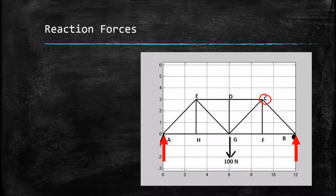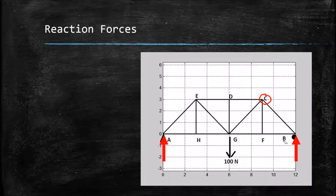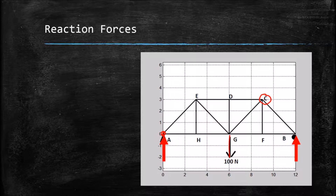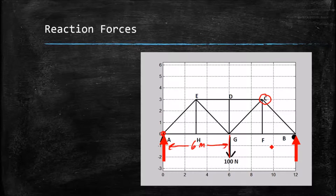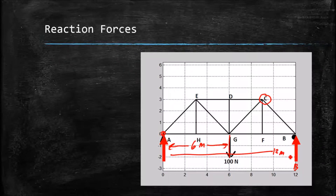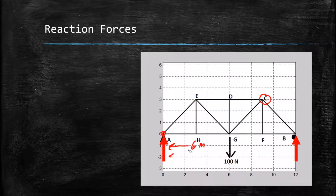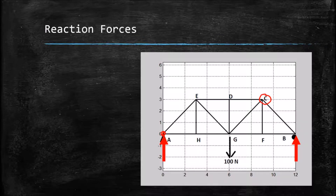Our first step is to find the reaction forces at each end. All I really need is the reaction force at B. I can do the sum of moments about A — the hundred Newtons times six meters, minus the unknown force at B times 12 meters. Or I can just look at this: it's very symmetric, the load is right in the middle, and by symmetry I can assume a 50 Newton reaction force at B.